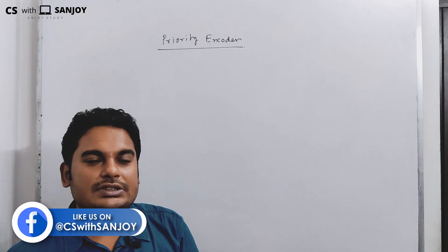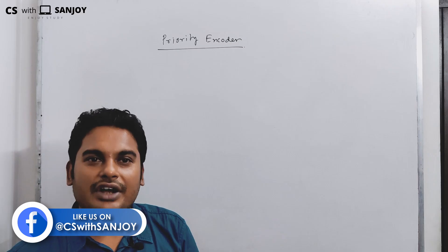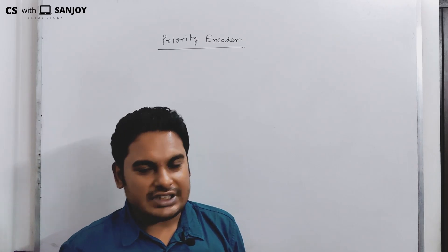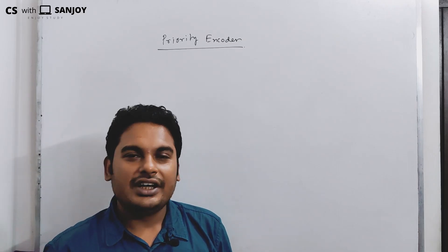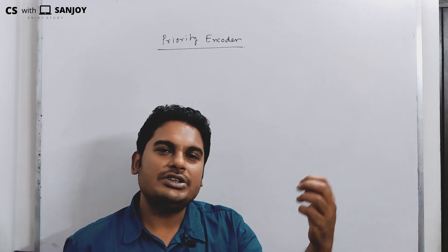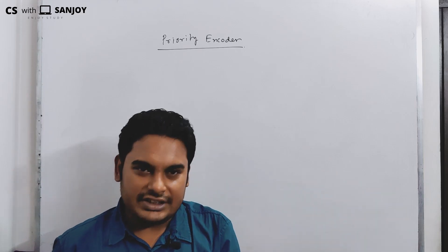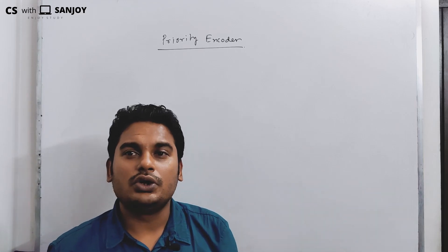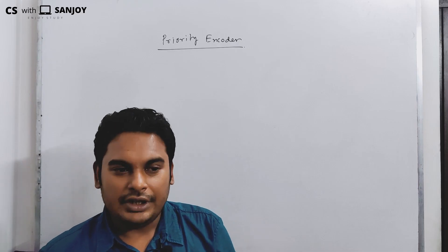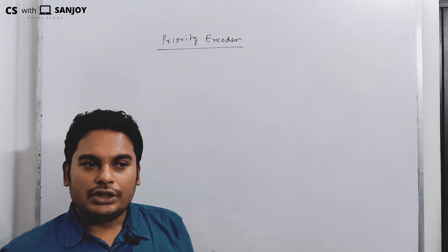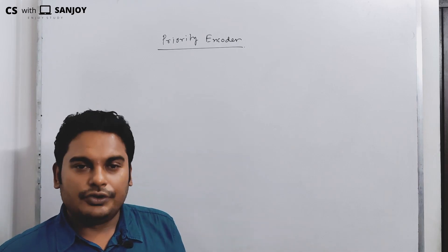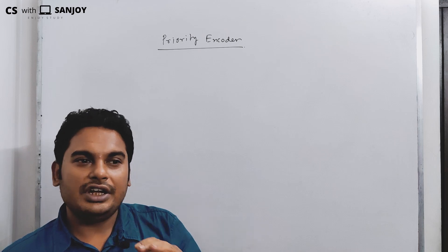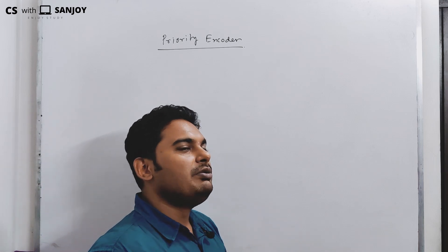Now, what is priority? Priority means among a set of inputs and a set of values, which one we prioritize — which one comes first, which one comes later. Let's see how the priority encoder works.